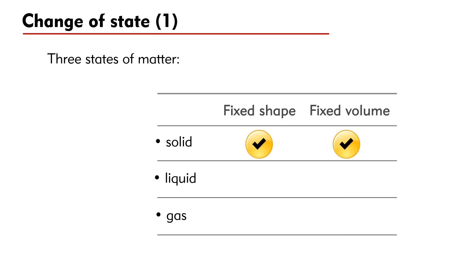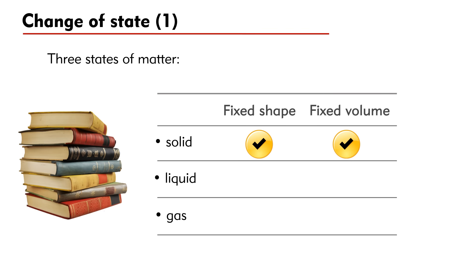Look at the table. A solid object has a fixed shape and a fixed volume. Examples are rocks, chairs, tables, and books, etc.